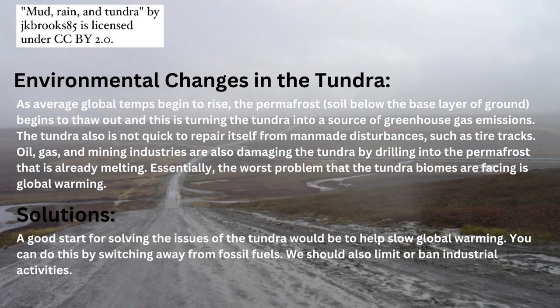There are many changes going on in the tundra that we should be aware of. Humans are destroying the tundra biome. Global warming is causing the permafrost below the base layer of Earth to melt. The biotic factors of this biome have adapted to live with the permafrost, so its melting would be detrimental to them. Not only is it already naturally melting, but oil, gas, and mining industries are drilling into the permafrost, further damaging it.